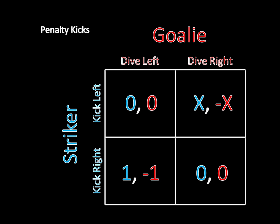The payoff matrix is very similar to a matching pennies game, where the striker wants to mismatch and the goalie wants to match. This imperfectness of the striker means that even if the striker is kicking left and the goalie is diving right — which is good for the striker — he only makes it with probability x. Notice that x is constrained here. Since we're talking about probabilities, x must be between zero and one. It should be clear that there isn't any pure strategy Nash equilibrium — it's like a matching pennies game where one wants to coordinate and one wants to discoordinate. This is going to lead to a mixed strategy Nash equilibrium, so let's solve for that.